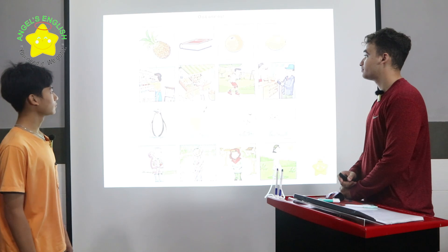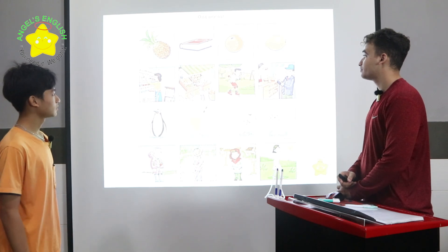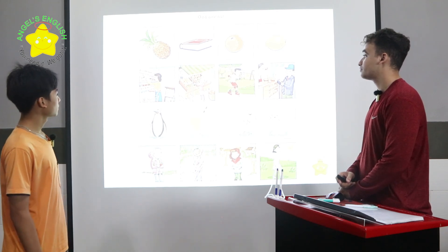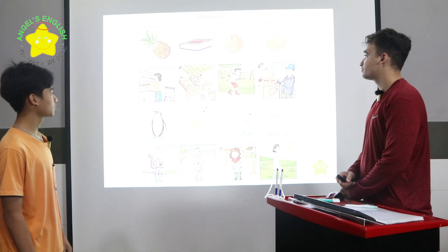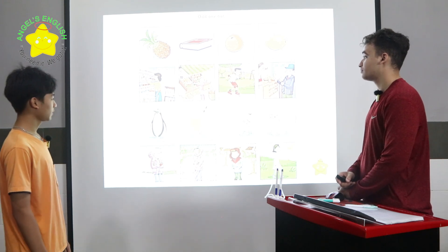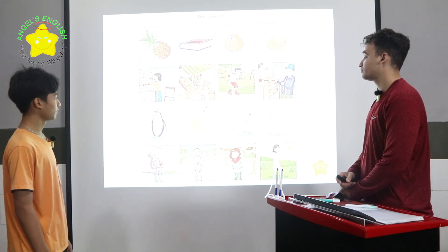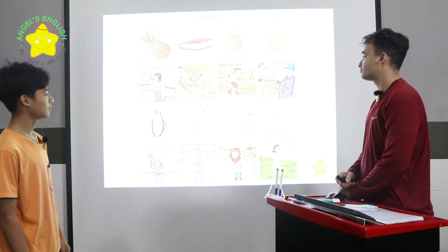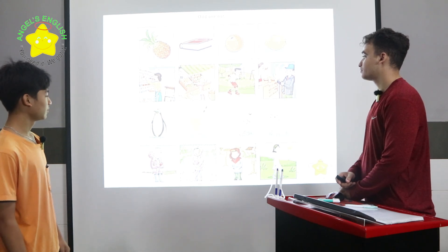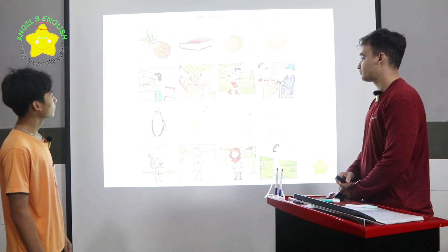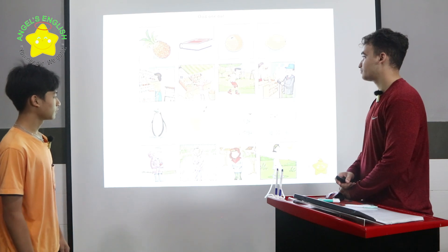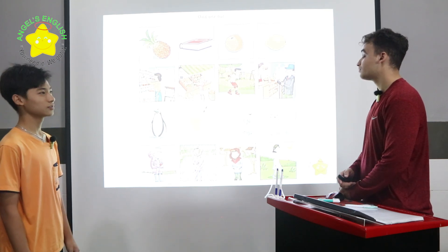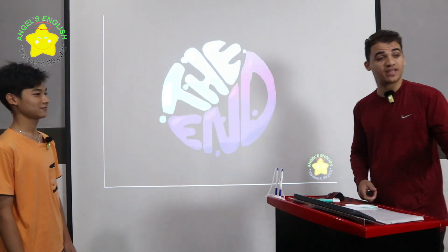In row two, picture three is different because he is skating, and pictures one, two, and four show people shopping. In row three, picture two is different because it is orange juice, but pictures one, three, and four are animals. In row four, picture four is different because pictures one, two, and three are cold. You've done an amazing job. You may now sit down.